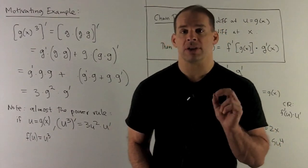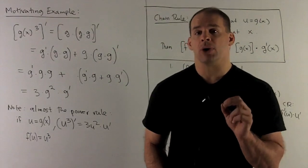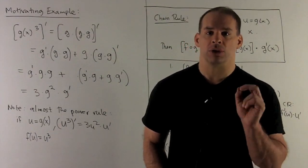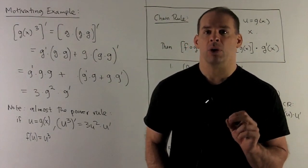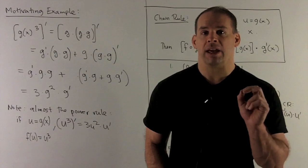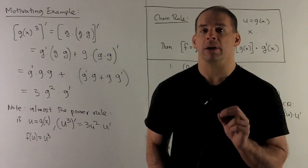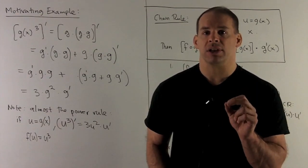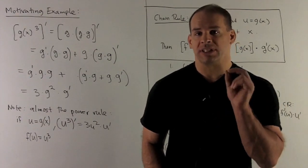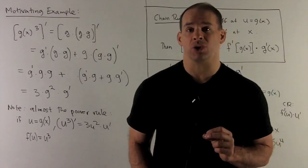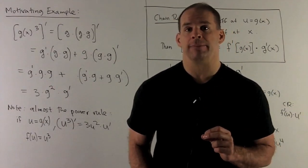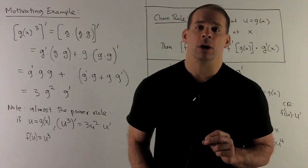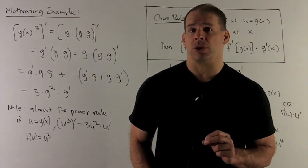If you notice, this is almost our power rule. If I had x cubed and took its derivative, we would have 3x squared. The only catch now is we're going to have 3g squared, and then we have to tack on a derivative of g. So this is how our chain rule is going to work.